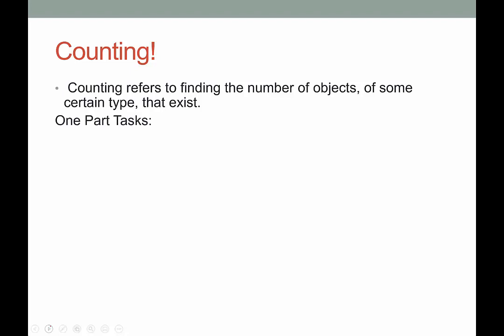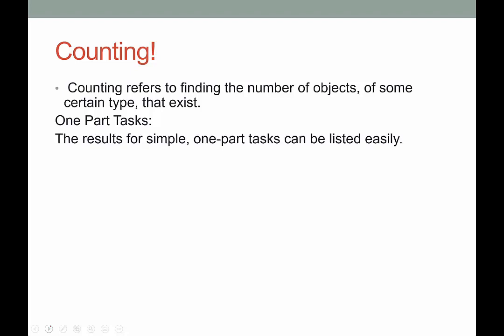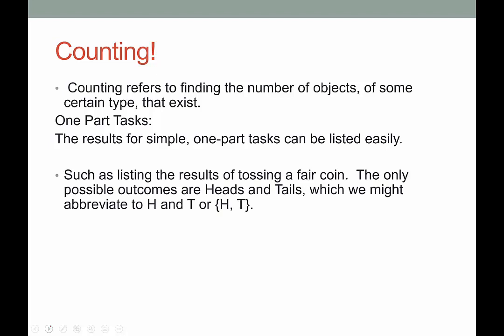There are different types of counting things. There's one called a one-part task. The results for simple one-part tasks can easily be listed. A one-part task is just one thing that you're doing — maybe it's listing the results of tossing a fair coin. There are only two possibilities: it's either going to land on heads or tails. Usually when we're listing things, we like to use abbreviations, so we might list the possible outcomes as H or T.